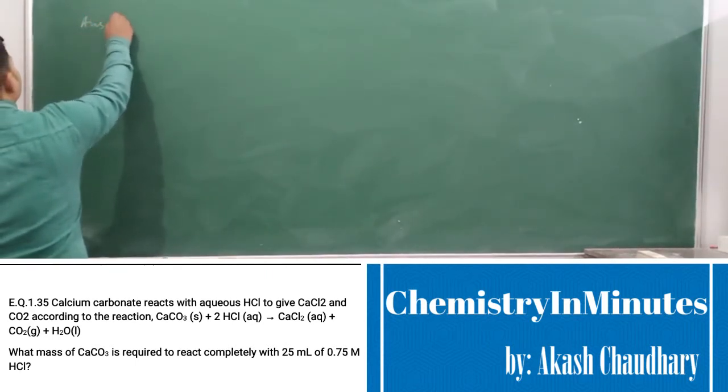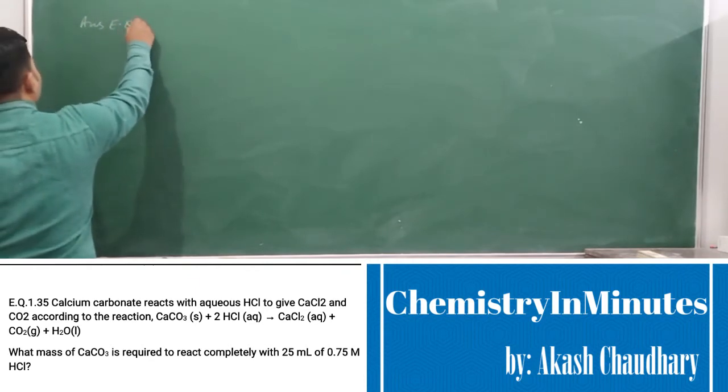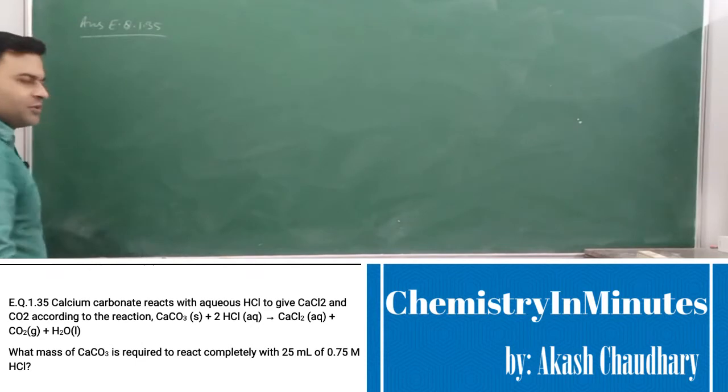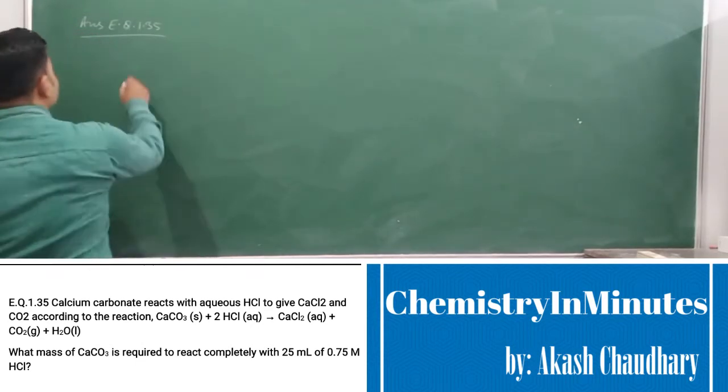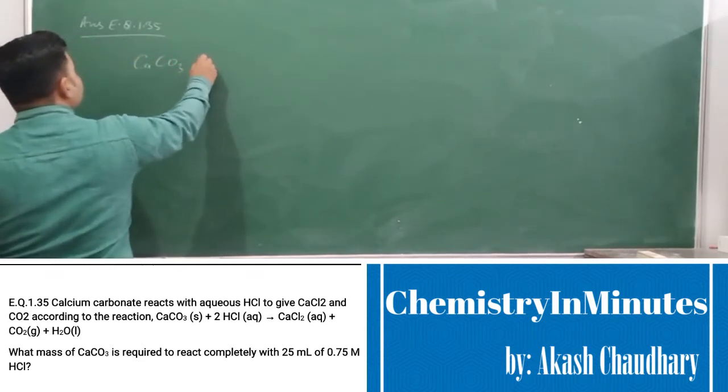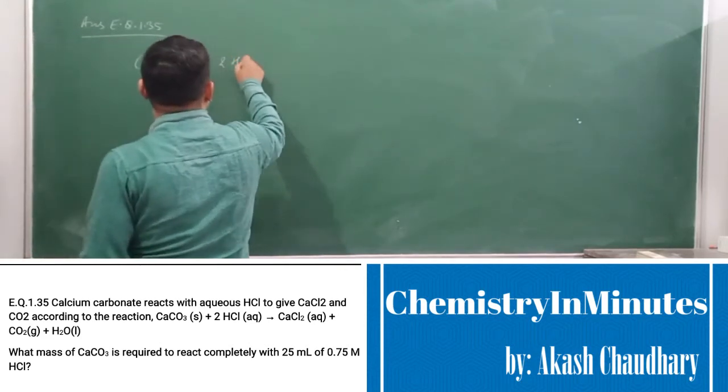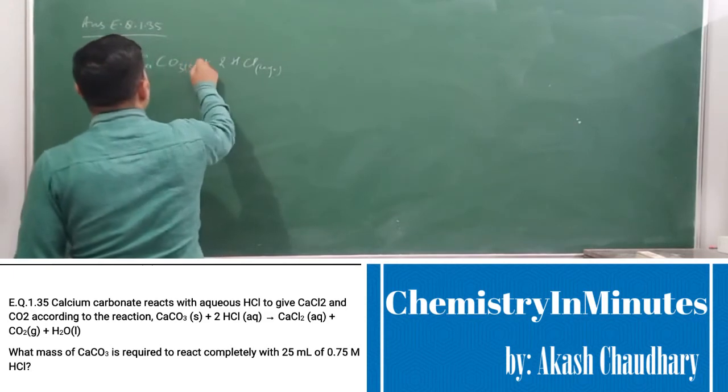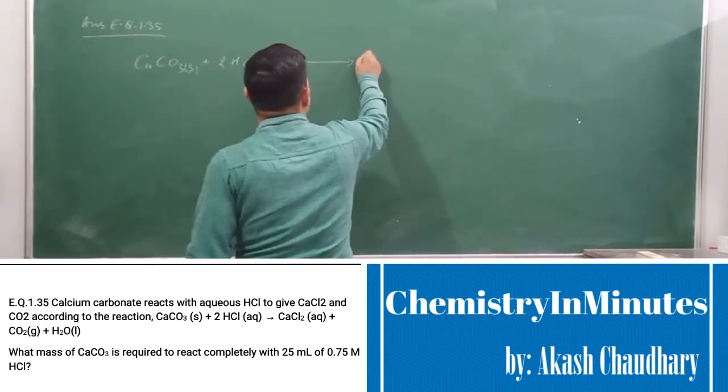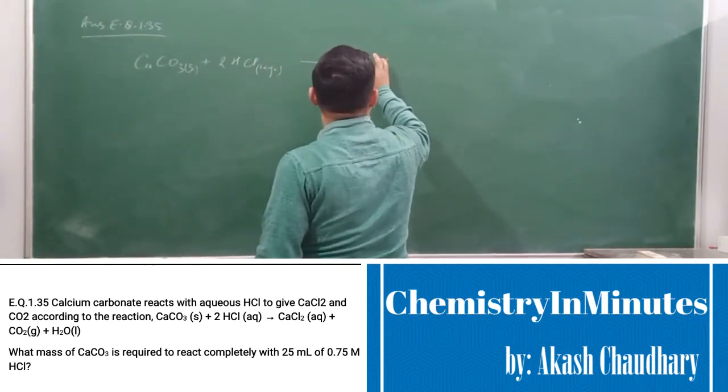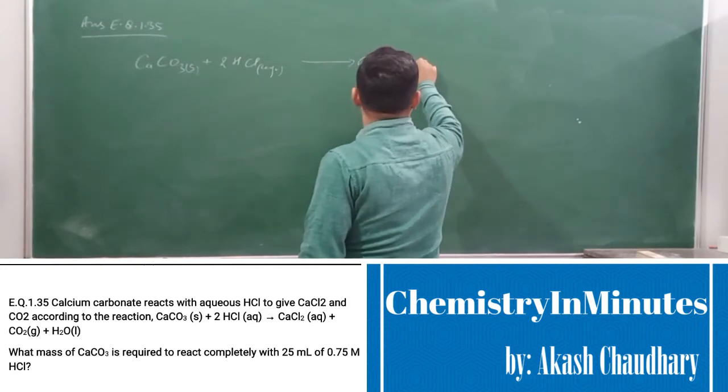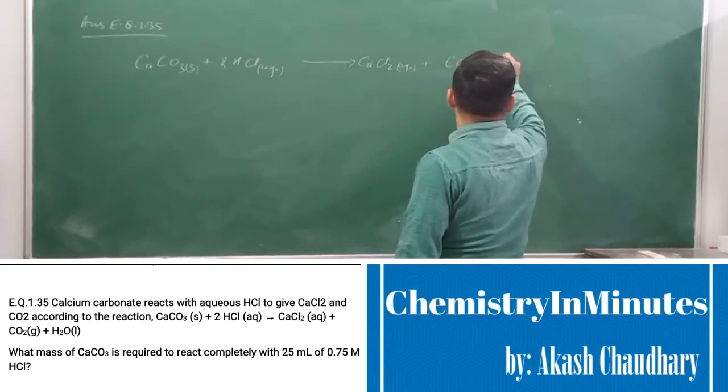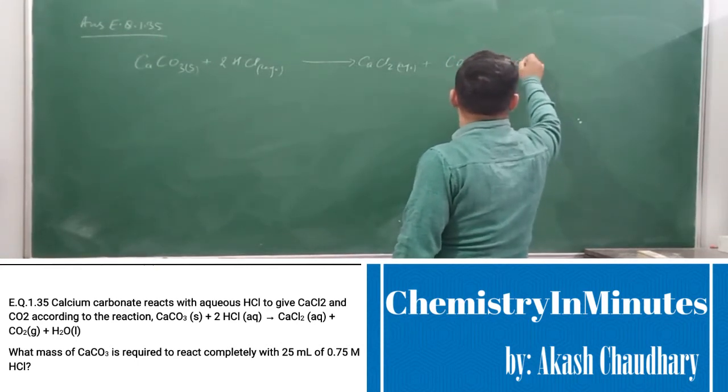Answer to exercise question 1.35. So first we have the reaction. What is the reaction? CaCO3 (s) + 2 HCl (aq) → CaCl2 (aq) + CO2 (g) + H2O (l).